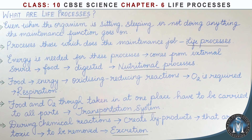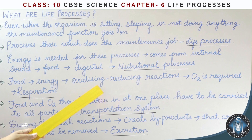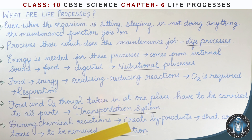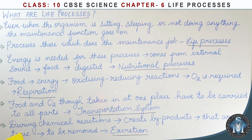This is a nutritional process. The loss of energy involves oxidizing and reducing reactions. This is related to the respiratory system and the transport system. By working on chemical reactions, the byproducts can be toxic and harmful to the body. This process of removing them is called excretion.